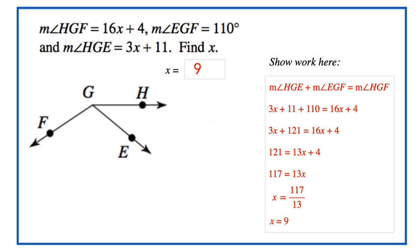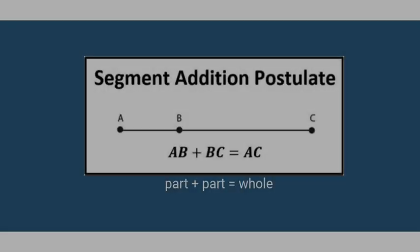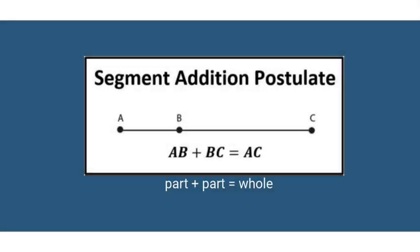Sometimes the question will ask you for something else, like find the measure of angle HGF. You have to be aware of the direction. We're going to move on to the segment addition postulate, closely related to what we were just doing. But this time, instead of two angles that are adjacent, we have two pieces of a line segment,